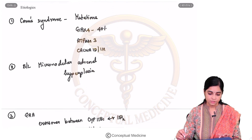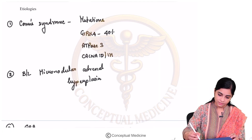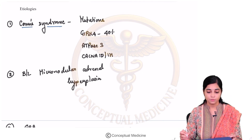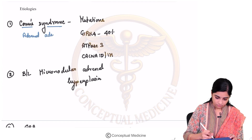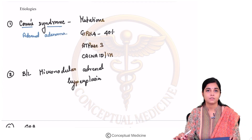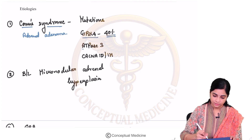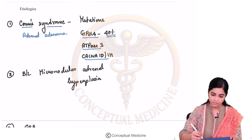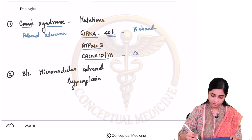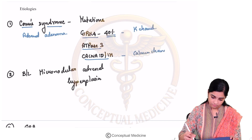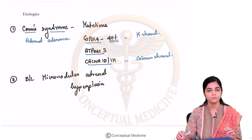Now let us look at all the etiologies for mineralocorticoid excess one by one. The first etiology is Conn's syndrome — an aldosterone-producing adrenal adenoma. The mutations associated with Conn's syndrome include GIRK4, accounting for 40% of cases, then ATP1A3 mutations and CACNA mutations. GIRK4 is a potassium channel, ATP1A3 is an ATPase, and CACNA is responsible for calcium channels. Mutations in any of these genes can result in an adrenal adenoma which produces aldosterone.